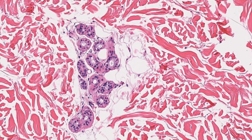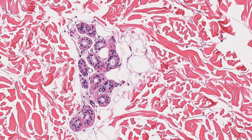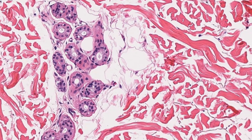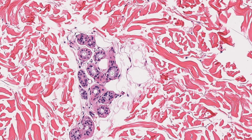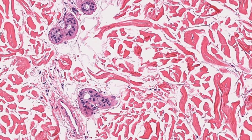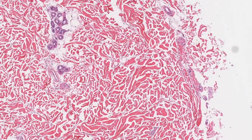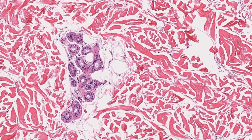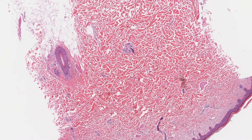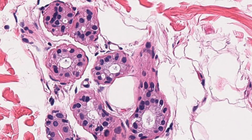We also have glands — you can recognize them as a cross-section of a duct, looking like a circle with a lumen. These are eccrine sweat glands, which produce sweat and play a role in thermoregulation. They are not associated with hair follicles. We also have apocrine sweat glands, which are associated with hair follicles. Eccrine sweat glands also have myoepithelial cells — muscle cells that squeeze the gland to push sweat out toward the surface.